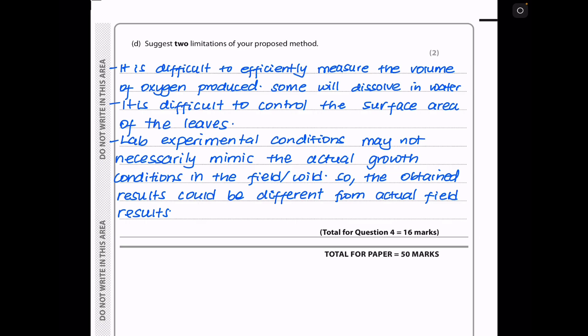Finally, they say suggest two limitations of your proposed method. In the proposed method, it's going to be very difficult to efficiently collect all the volume of oxygen produced because some oxygen could dissolve in the water. And because we are using plants with different sizes of leaves, it's going to be difficult to control the surface area of the leaves exposed for photosynthesis to occur. So I say it is difficult to efficiently measure the volume of oxygen produced since some will dissolve in the water. It is also difficult to control the surface area of the leaves. And lab experimental conditions may not necessarily mimic the actual growth conditions in the field or in the wild. So the obtained results could be different from the actual field results.